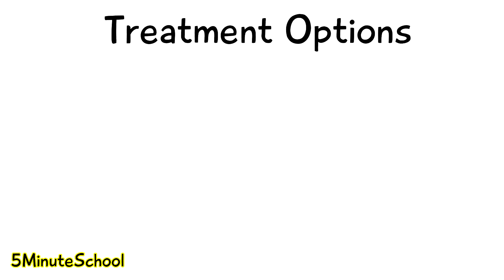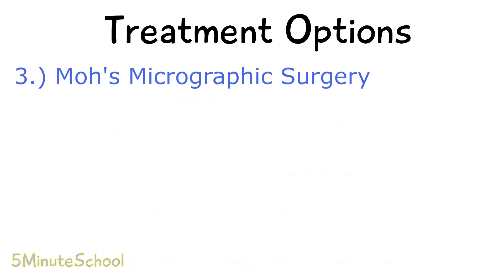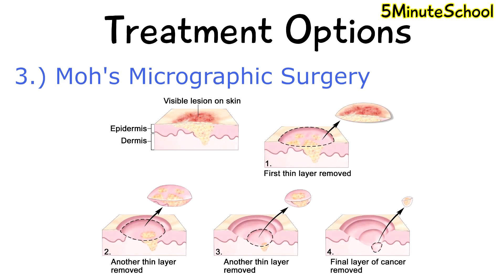The third type of treatment is Mohs micrographic surgery, which is the more effective method. The tumor is excised with 1-2mm margins and processed using the Mohs-specific horizontal frozen technique. The purpose is to visualize the margins of the excised tissue, and if the tumor is noted in that area, further tissue is removed in the direction of the present tumor. It's quite conservative in terms of tissue removal.